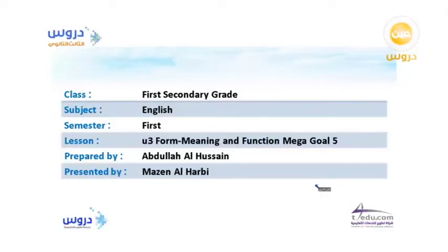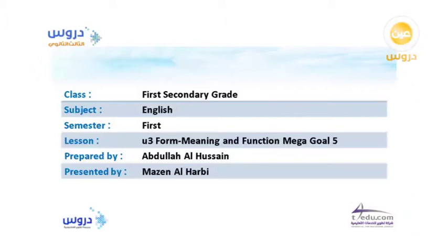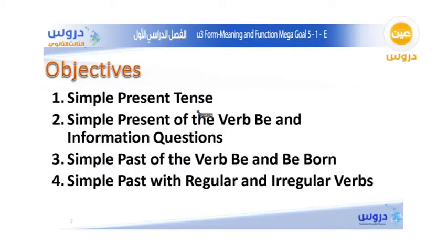As-salamu alaykum wa rahmatullahi wa barakatuh, welcome everyone in today's class. This class is for third secondary grade in English subject for the first semester. The lesson is Unit 3, Form, Meaning and Function from the book Mega Goal 5 on pages 44 and 45. It is prepared by Abdallah Hussain and presented by Mima Azana Harbi. Our objective in today's lesson: number one, to know the simple present tense, the simple present of the verb be, and information questions.